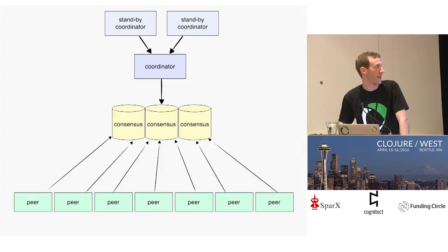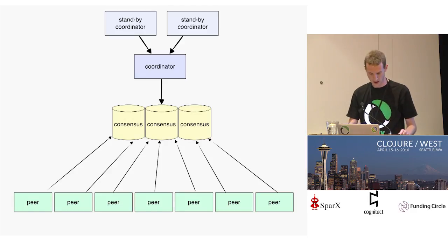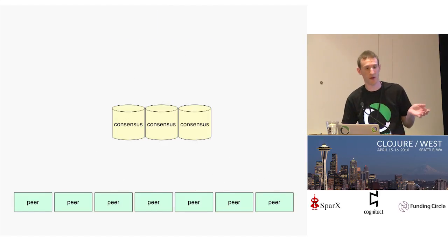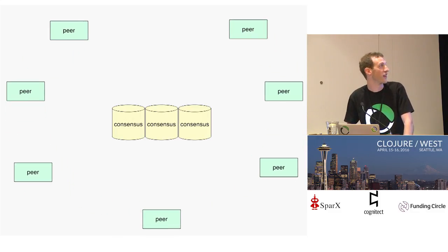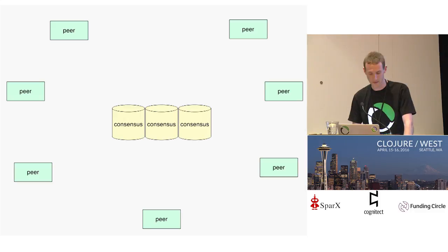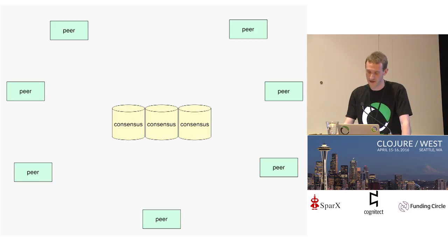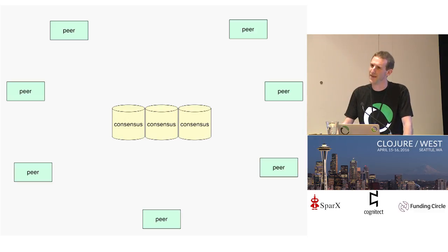As of version 0.4, Onyx had a coordinator. In 0.5, we removed it — we didn't want a centralized coordinating entity anymore. When you move towards a peer-to-peer-ish design, the canonical way to do it is to represent your topology as a ring. My background before Onyx was in database research, and the design you're going to see is quite similar to a CP database — there's a parallel going on here.